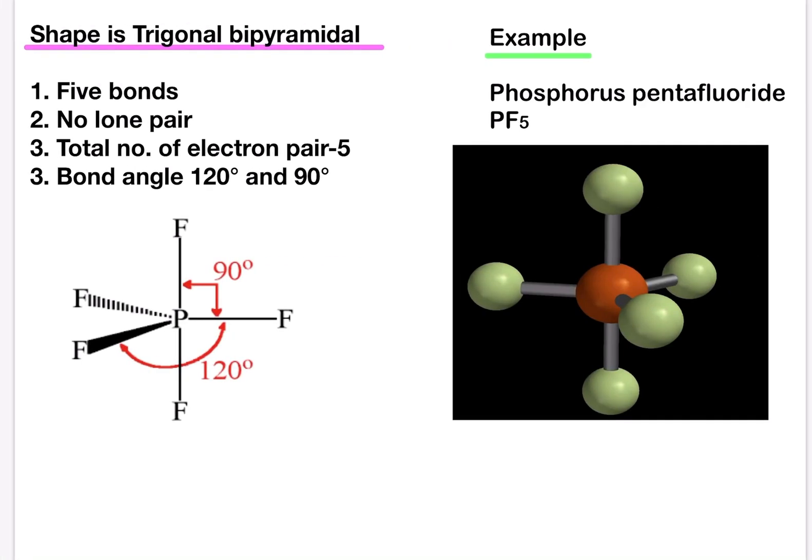Next example is trigonal bipyramidal and the compound is phosphorus pentafluoride PF5. Phosphorus pentafluoride has five bonding pairs of electrons and no lone pairs. The repulsion between the electron pairs results in the most stable structure being one where two pyramids with basis of three angles are joined. We call this structure trigonal bipyramidal.